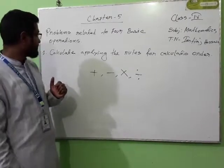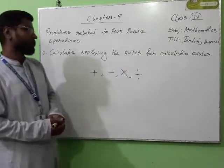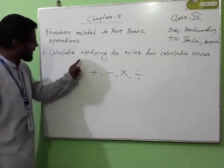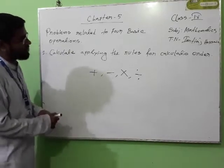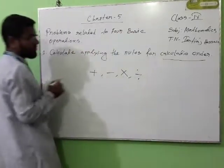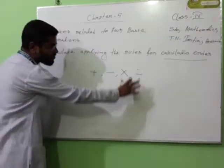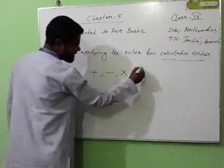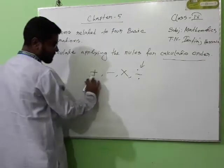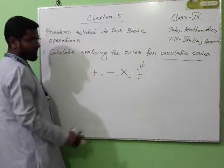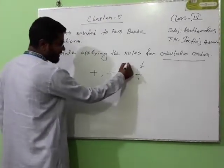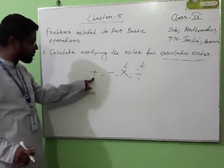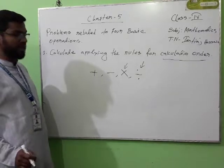First, we will learn to calculate applying the rules for calculation order. We need to know what is calculation order. If these four operations are together, which operation we will do first? First, division we need to do first. After finishing the division, then we will do multiplication. If it is done, then we will do addition, then subtraction.